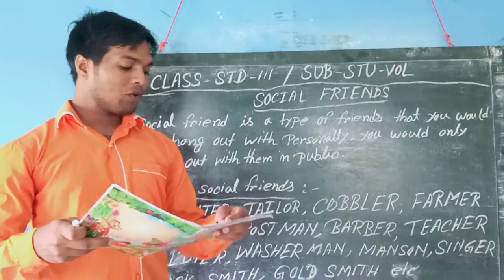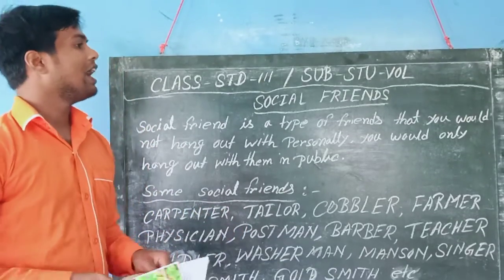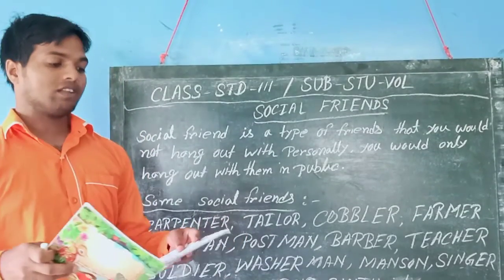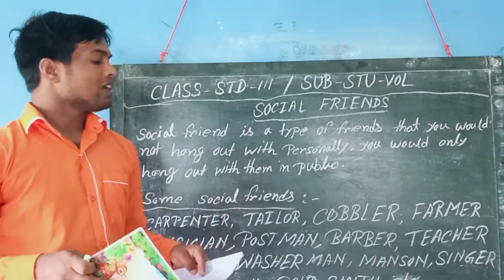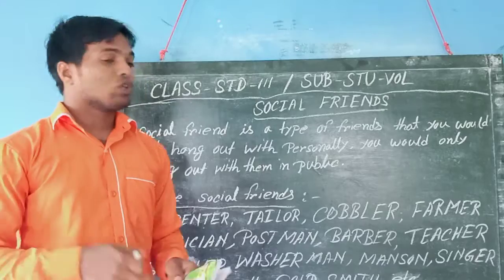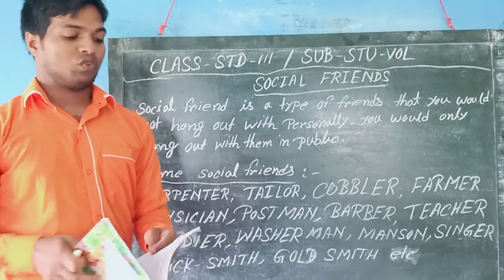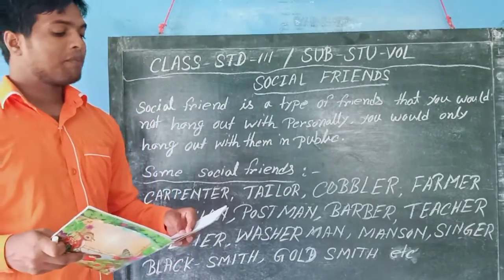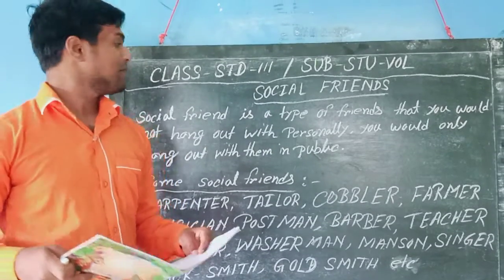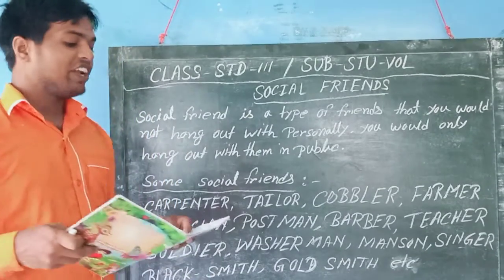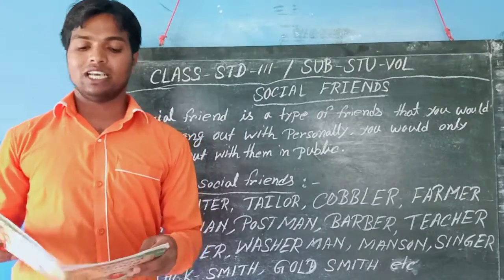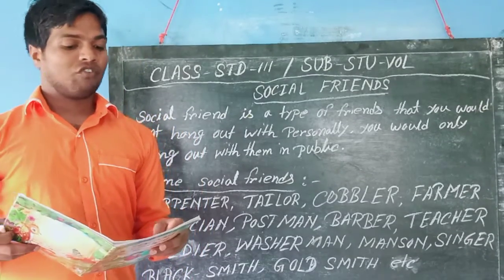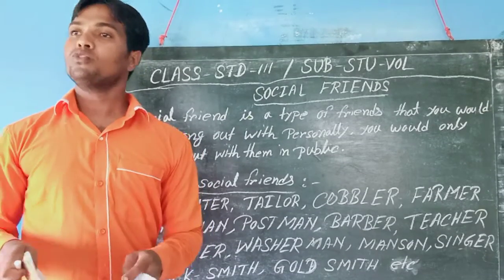Blacksmith, Goldsmith, and Sweeper. So what does Social Friend do? A Carpenter makes tables and chairs from wood.